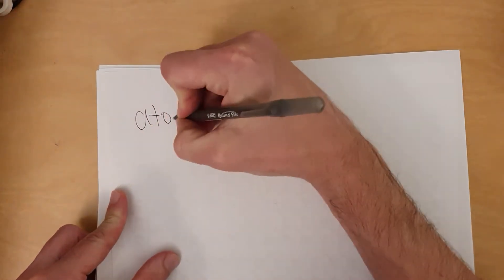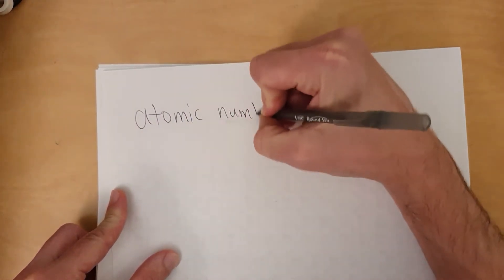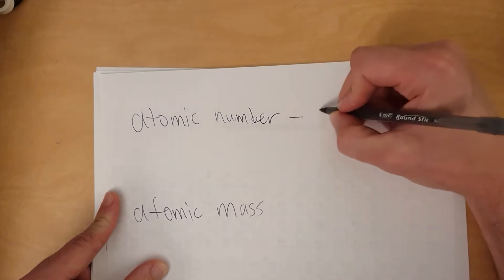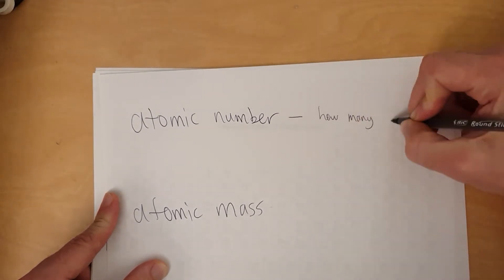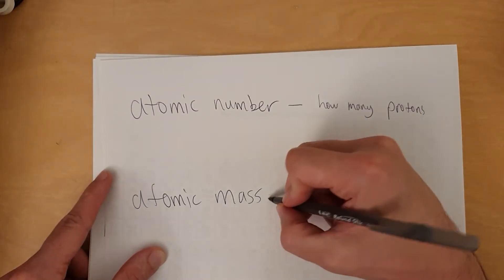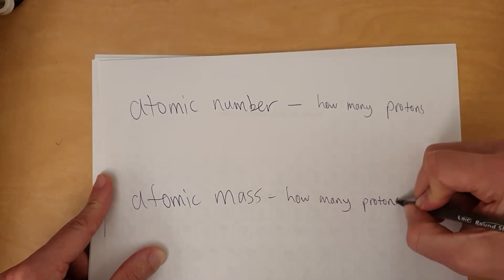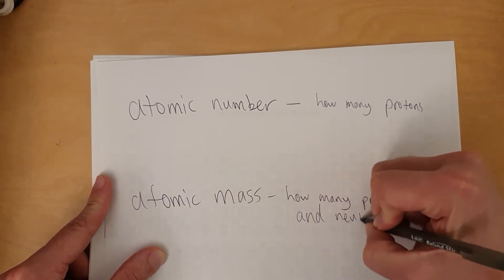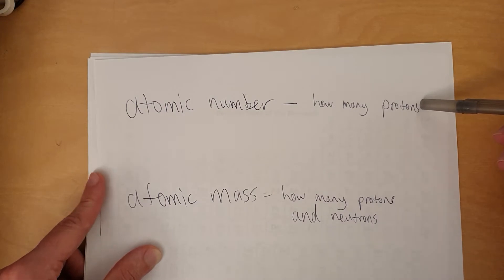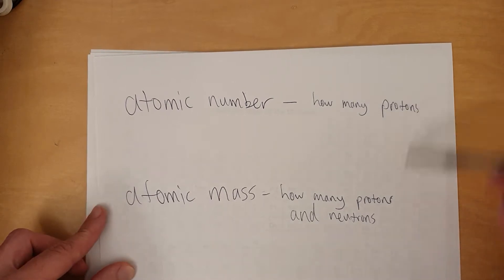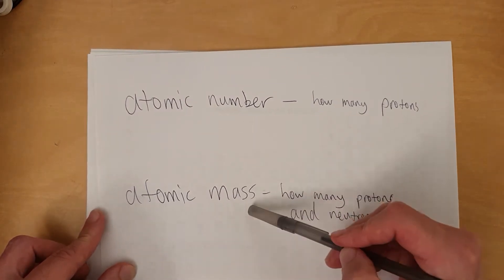Here's the periodic table. There are two numbers to be aware of: the atomic number and the atomic mass. The atomic number tells you how many protons. The atomic mass tells you how many protons and neutrons — so it's the total number of particles in the nucleus. Notice: the atomic number is just protons, while atomic mass is protons plus neutrons, so this number is always bigger.